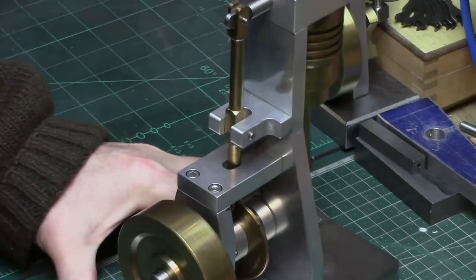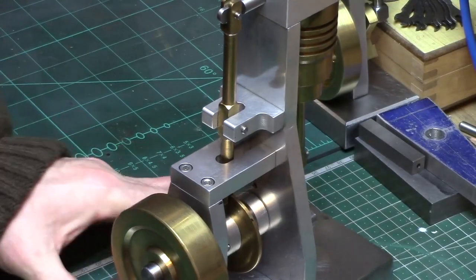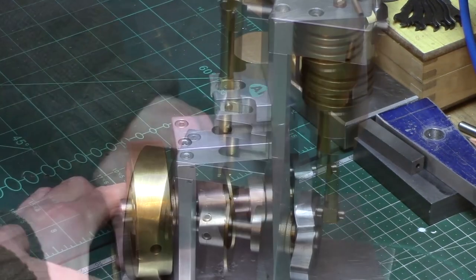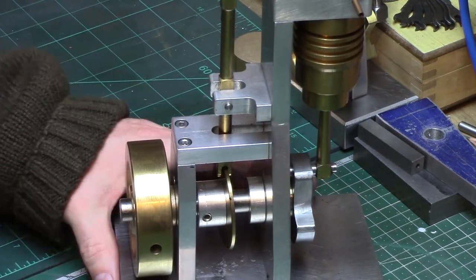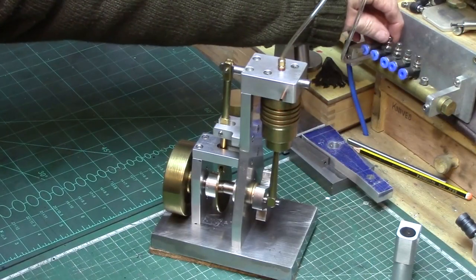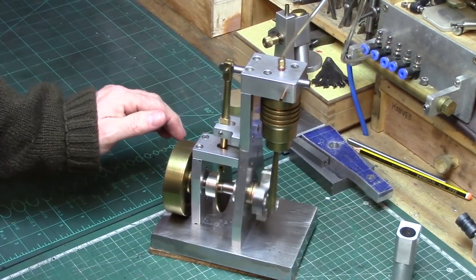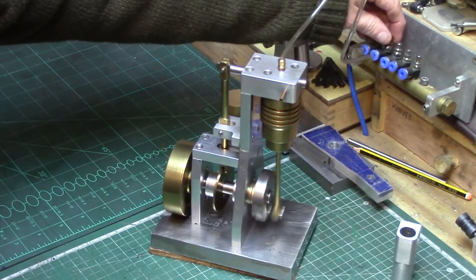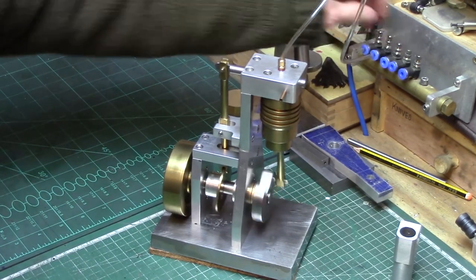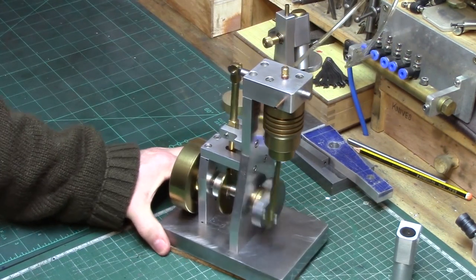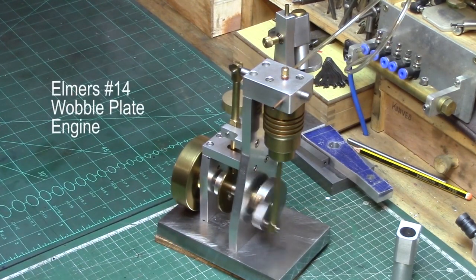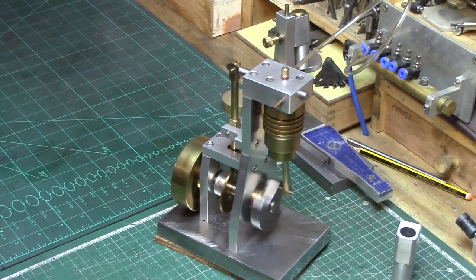Now if push comes to shove, there is always the old fashioned way of removing metal using a set of files. After all, many beautiful model engines were built back in the early 19th and 20th century using nothing but hand tools. So, as they say, there's always more than one way to skin a cat.